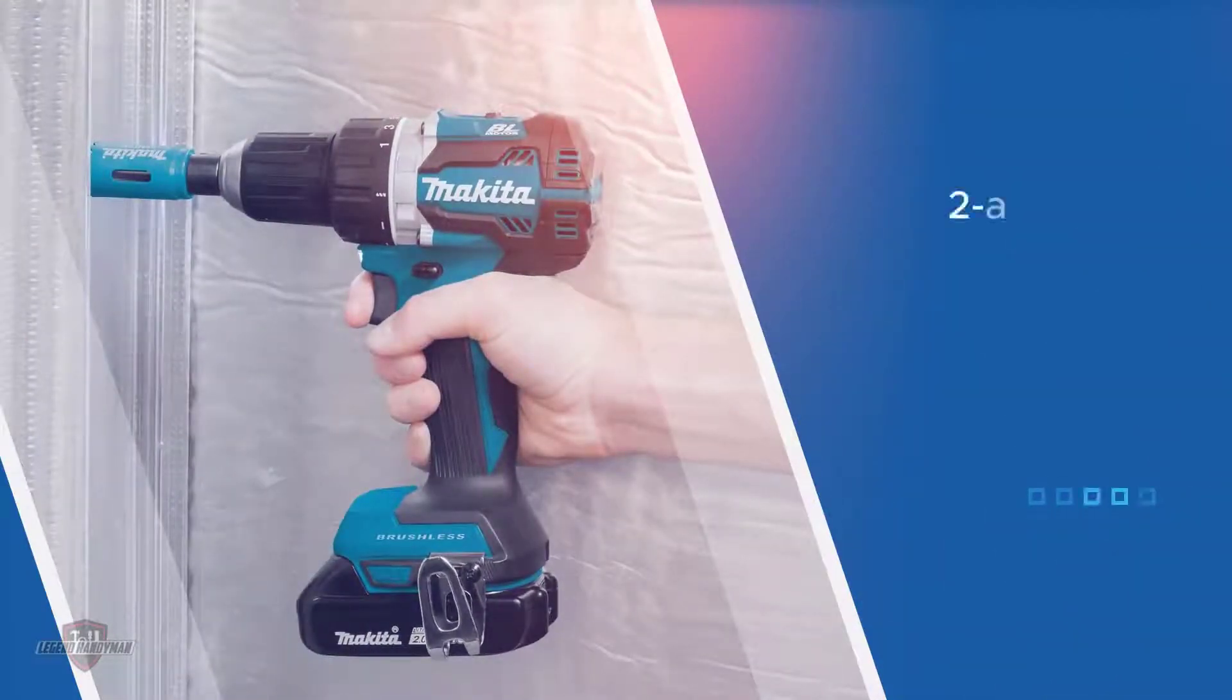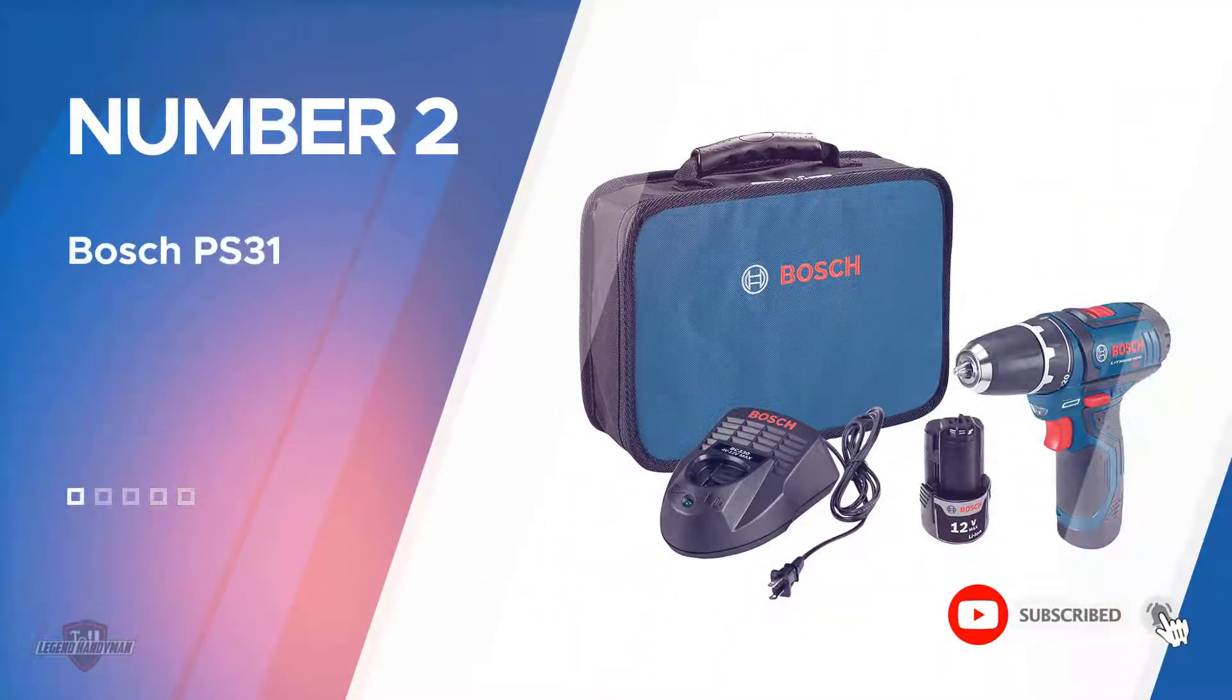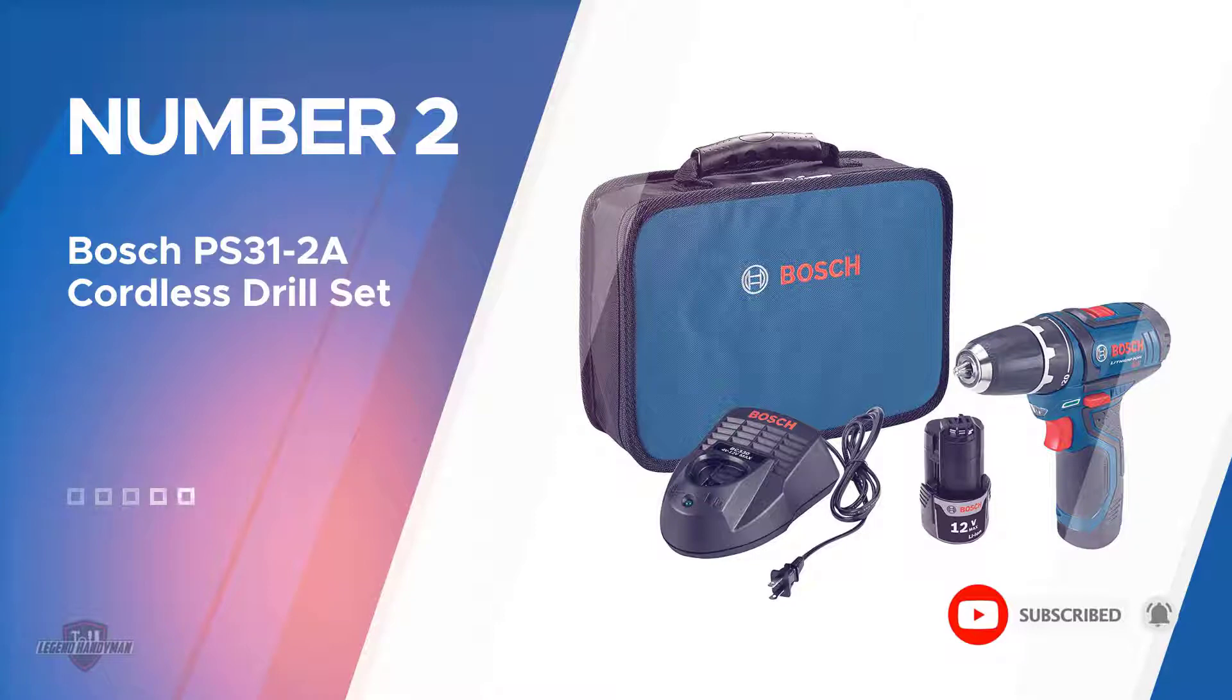Two 2-amp-hour batteries, a belt hook and LED light, and a hard-sided case are included. Number two: Bosch PS31-2A Cordless Drill Set.